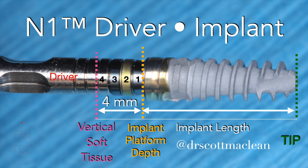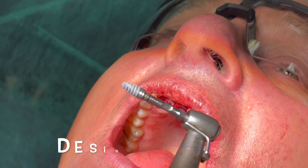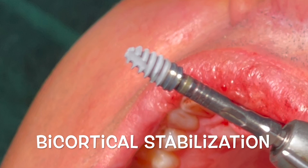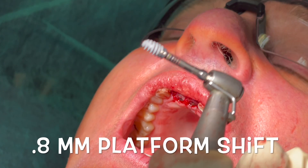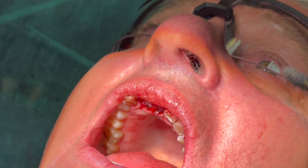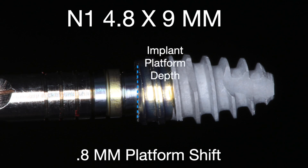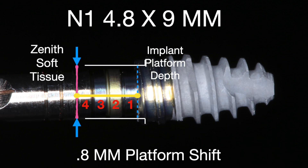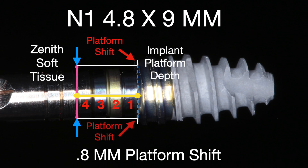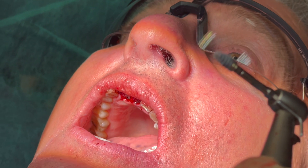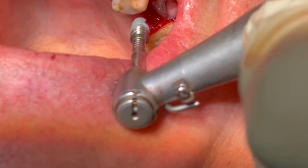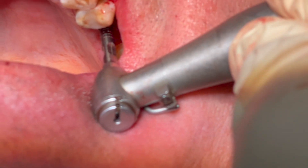We're going to show you the positioning of a 4.8 millimeter platform-shifted implant. It's designed for bicortical stabilization — it's going to go into one cortex and, since we have osseodensification here, it will grab in the outer cortex and also at the floor of the sinus. We can tell that the zenith of the soft tissue is here, and the platform shift ideally should be at a minimum of 3.5 to 4 millimeters, allowing us to get success for soft tissue seal.